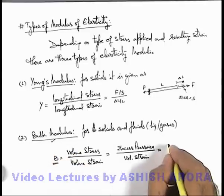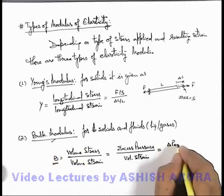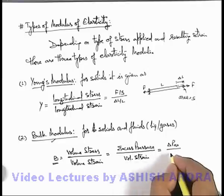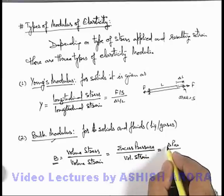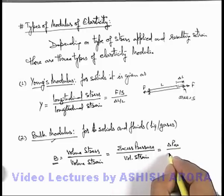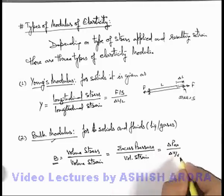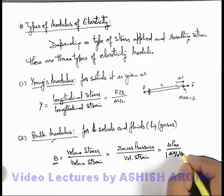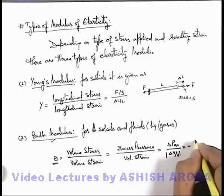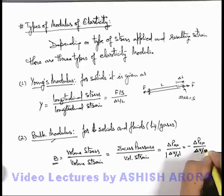So this is delta P excess divided by volume strain. It is always negative because when we apply an external pressure the volume of body always decreases. So it can always be written as delta V by V in magnitude, or we can take its sign as negative or it can be written as minus of delta P excess divided by delta V by V.